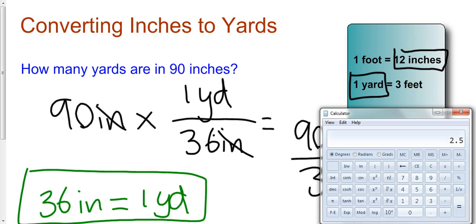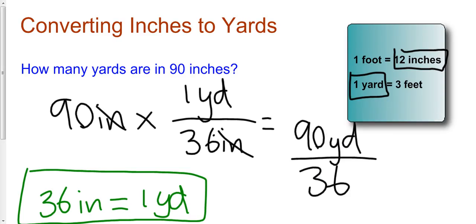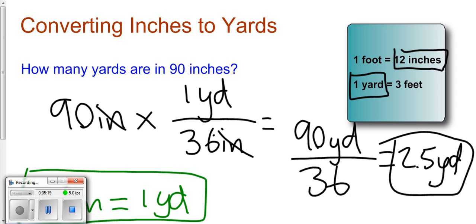And as you can see, when I take 90 and divide by 36, I get 2.5, so this is 2.5 yards.